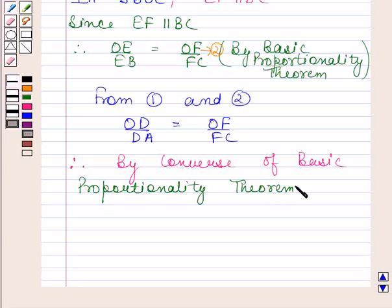we can say that DF is parallel to AC. Hence, we have proved that DF is parallel to AC. This completes the session. Bye and take care.